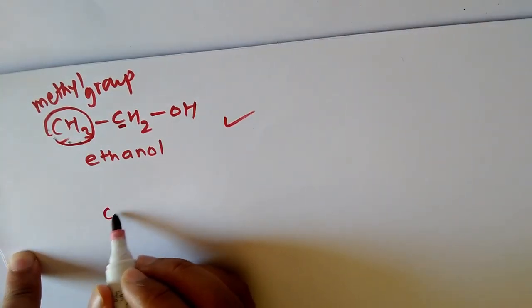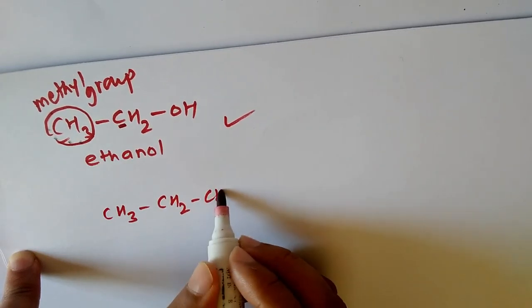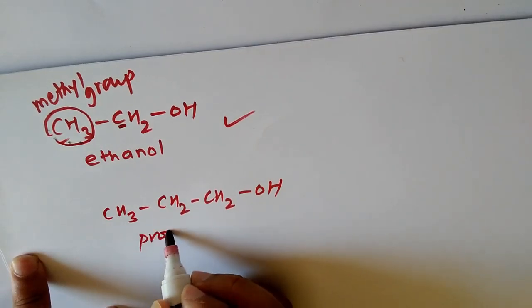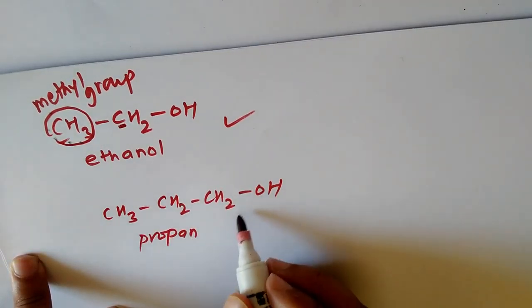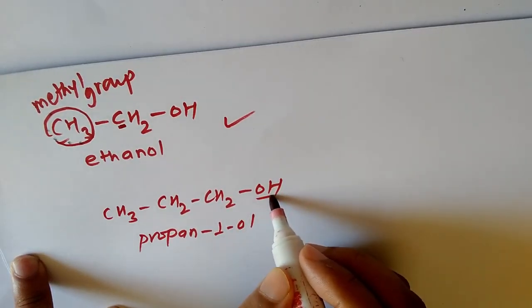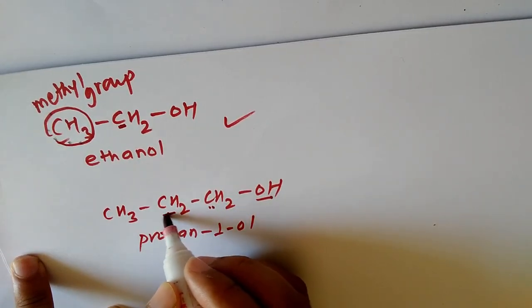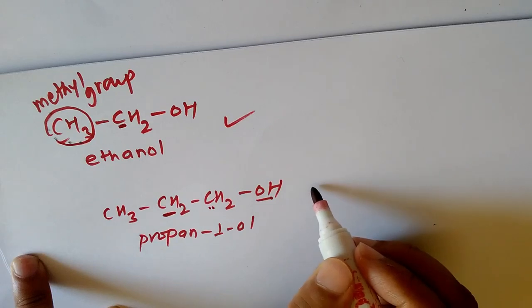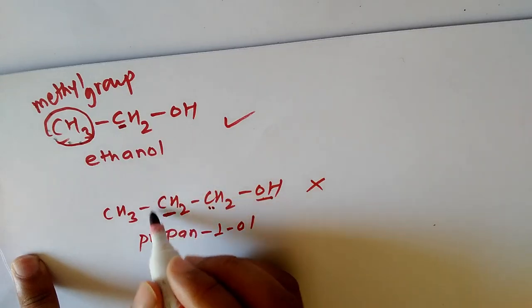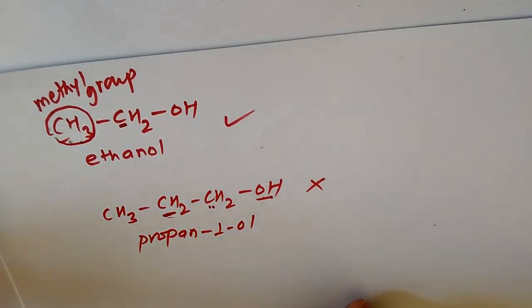Another example: CH3-CH2-CH2-OH, which is propan-1-ol, a three-carbon alcohol. Here the OH is present at position one, so the OH-bonded carbon is bonded with CH2, not CH3. Therefore propan-1-ol does not give the Iodoform test.